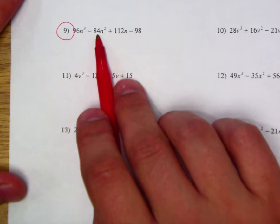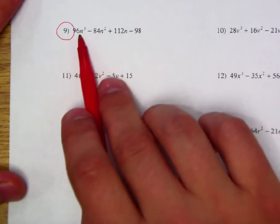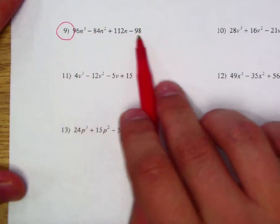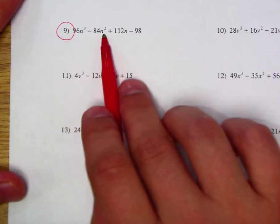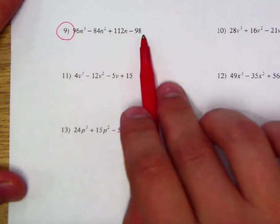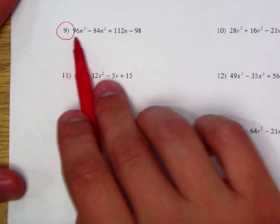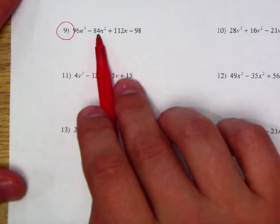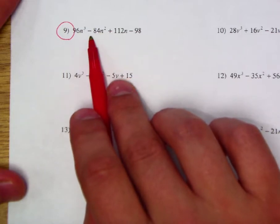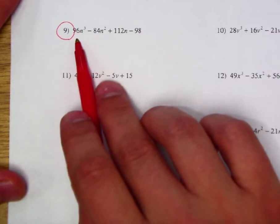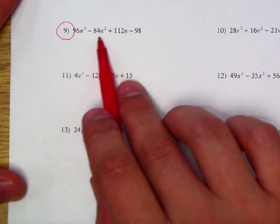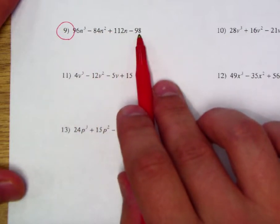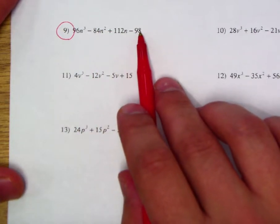So let's try this again. So 96n³ and 84n², this is our n³, n², n, and then degree 0. I may want to try to group these and then these here at the end. Well, 96 and 84 have 12 in common. This would be 12 times 8, and this one's going to be 12 times 7.